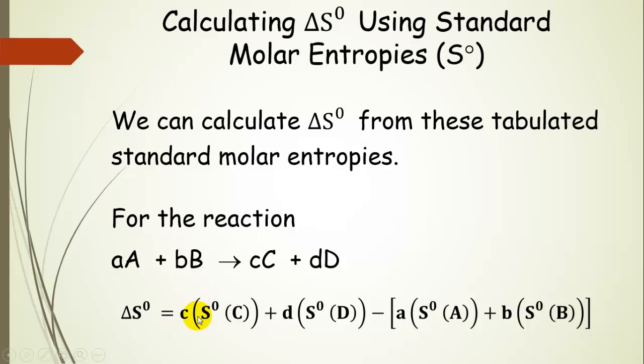If we take the coefficient multiplied by the standard molar entropy for product C and add it to the same for product D, then we're going to subtract off what we started with. That would be the coefficient of reactant A multiplied by its standard molar entropy and the same for B. So that will give us the change in entropy for that reaction.